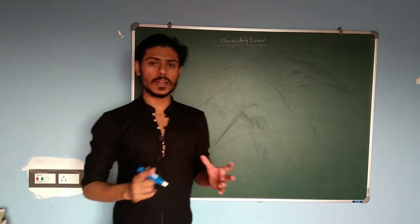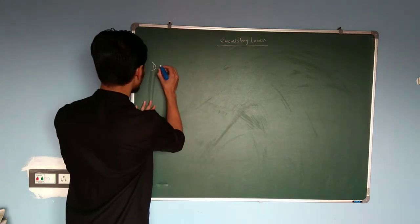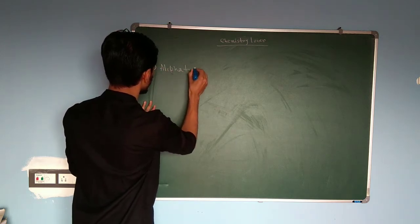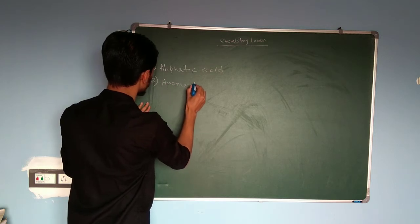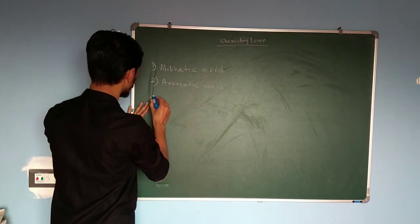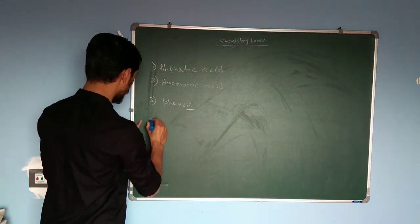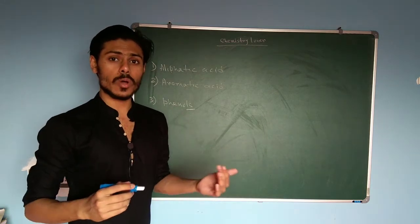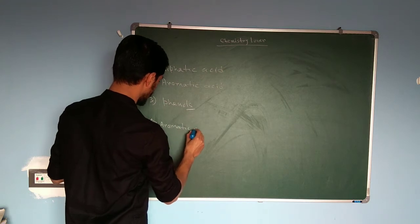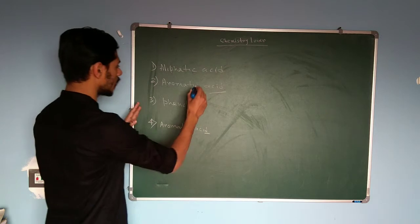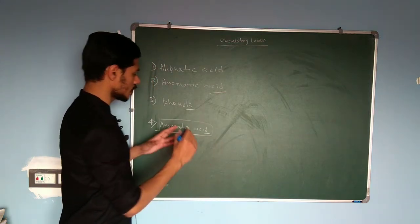If I talk about organic acids, we can classify them into four classes. The first one is aliphatic acid, the second one is aromatic acid, the third one is phenols — phenols are aromatic alcohols but they are acidic in nature — and the fourth category is acids whose conjugate base is aromatic, which we can call aromatic acids.